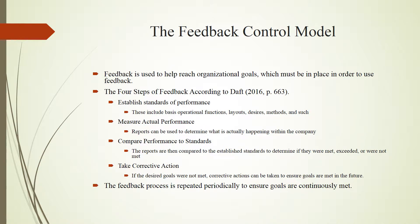Feedback is used to help reach organizational goals. There are four general steps of feedback. The first step is establishing standards of performance — the company's goals and desires. The second step is to measure the actual performance, meaning what is happening inside the company. The third step is to compare the performance to standards. And the last step is to take corrective action. If the company sees it is not reaching its goals, it can enact policy changes to try to reach those goals. Even if goals are currently being met, the feedback model can continue to be used across different time periods to ensure goals remain on track.